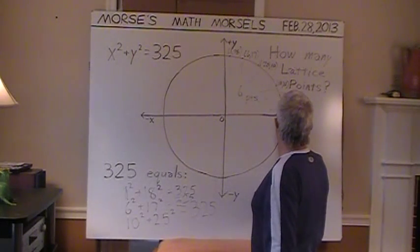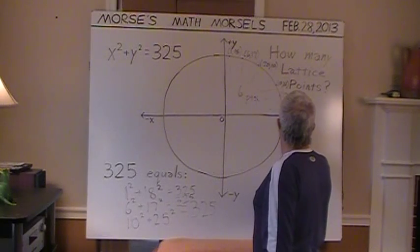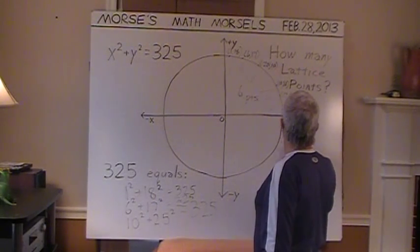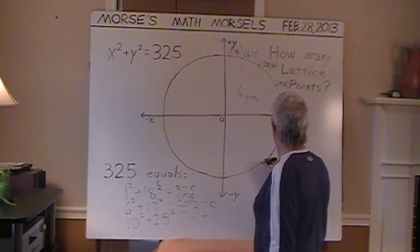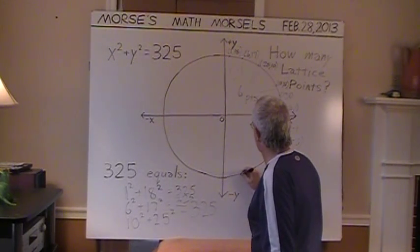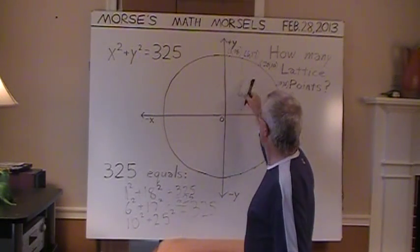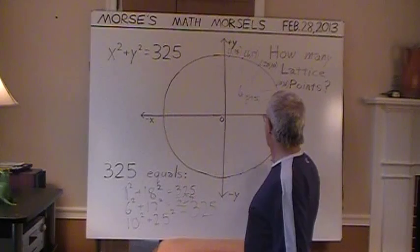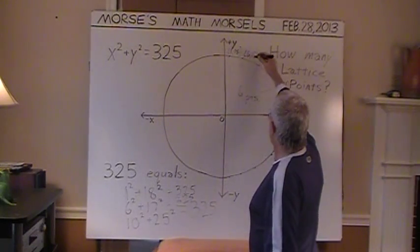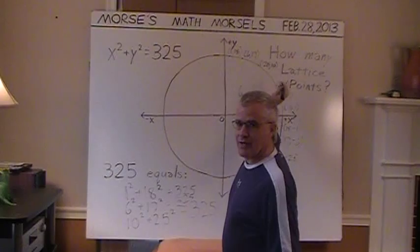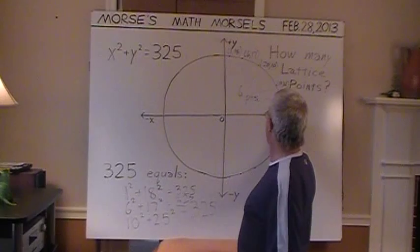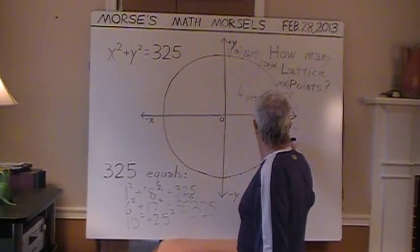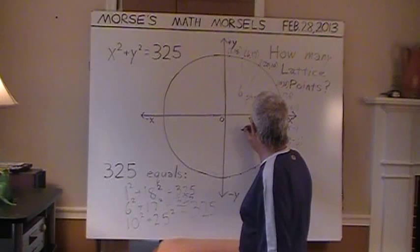Across the x-axis, we could reflect this to 18 and negative 1. And this could be 17, negative 6. And over here, 10, negative 25, and so on. Plotting the rest of the lattice points in quadrant 4. This is quadrant 1, 2, 3, 4. So we're going to have reflections, as it were, as though these 6 lattice points were looking at a reflection of themselves through this x-axis and across to this quadrant. 1, 2, 3, 4, 5, 6 more lattice points.